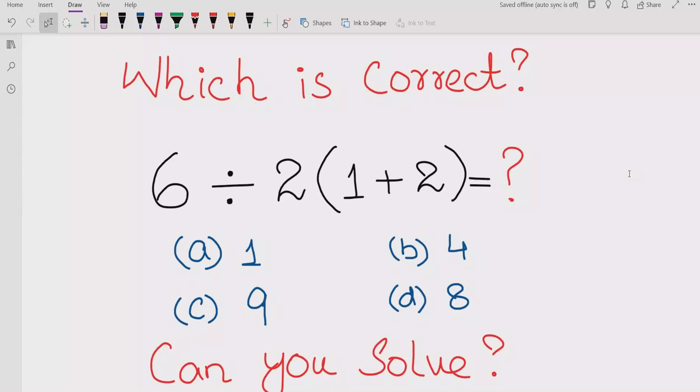We have a quiz: 6 divided by 2 and multiply by parenthesis 1 plus 2. We have four answers to select from: 1, 4, 9, or 8. And people solve these questions wrongly.